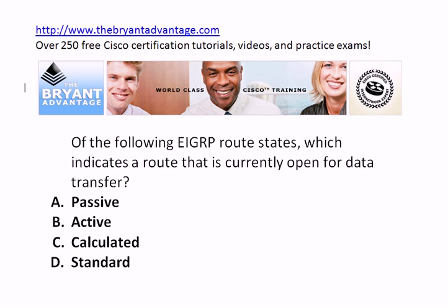Of these particular EIGRP route states — passive, active, calculated, and standard — which of these indicates a route that is currently open for data transfer? In other words, putting it simply, it's an available path. Passive, active, calculated, or standard?